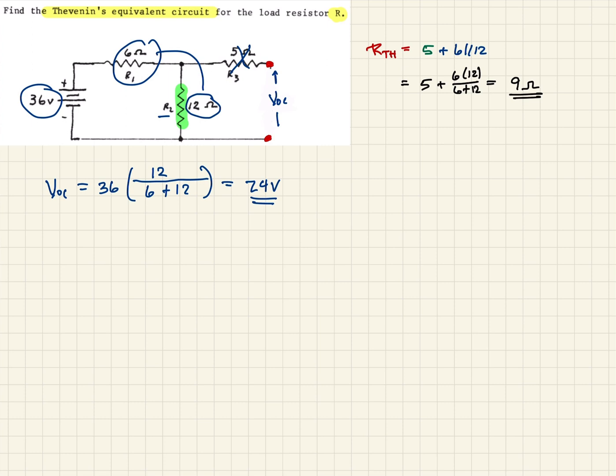So now we have our Thevenin resistance and we have our open circuit voltage. We have everything we need to draw the Thevenin equivalent circuit between the two terminals. So remember a Thevenin equivalent has a voltage source, which in this case is going to be the open circuit voltage, which is 24 volts. And that will be in series with a resistor,